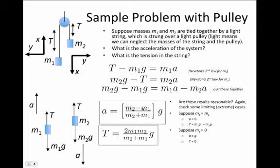If I do that, then I look in this box expression for a. If I set m1 to 0, it disappears from the numerator and disappears from the denominator, and I have just m2 over m2, I get a equals g. I also see that if m1 is 0, the tension is 0. Is that reasonable?